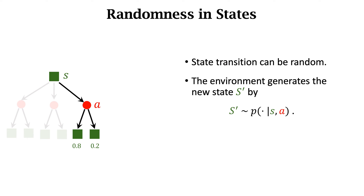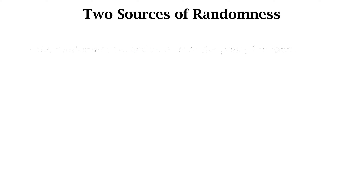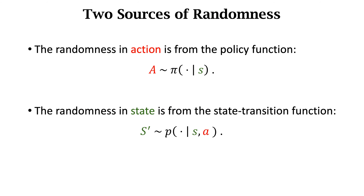The environment, namely the game program, will randomly select one out of the two choices according to the probabilities. In sum, there are two sources of randomness. One source is the agent's action A — the policy function pi outputs a probability distribution, and the action is randomly sampled from it. The other source is state transition: the environment has a state transition function p, which is a conditional probability density function, and it generates a new state by randomly sampling from this function.